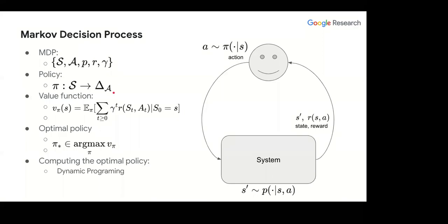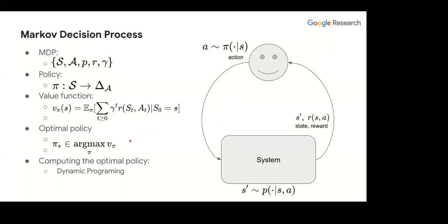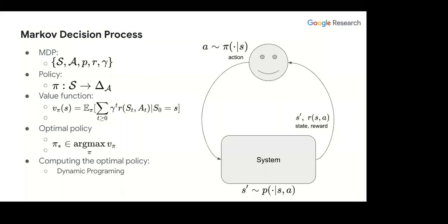To quantify the quality of a policy, we have the value function: for a given state and policy, it's the expected cumulative sum of discounted rewards over possible future trajectories, where stochasticity comes from the system dynamics and the stochastic policy. The optimal policy is the one that maximizes the value function component-wise. Computing the optimal policy is the problem of reinforcement learning — and RL is mostly dynamic programming from data.